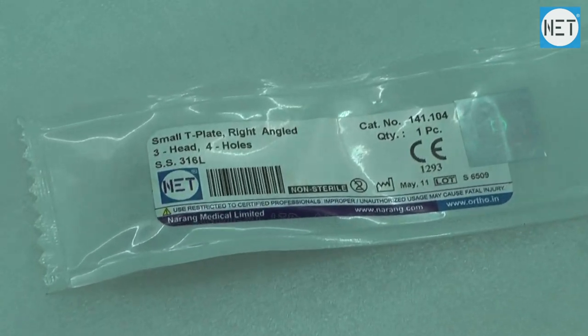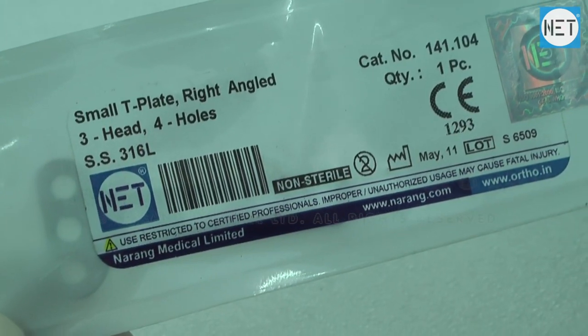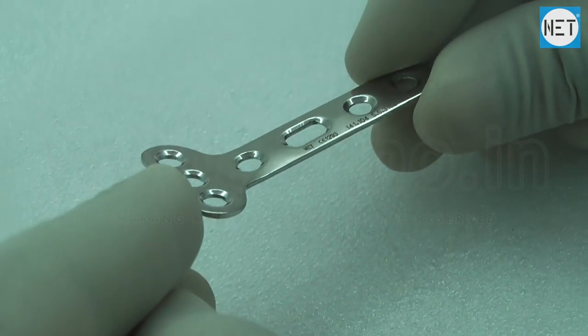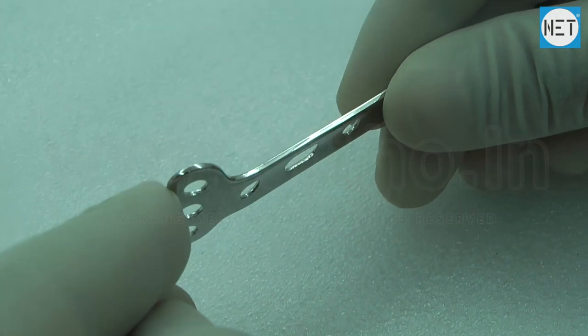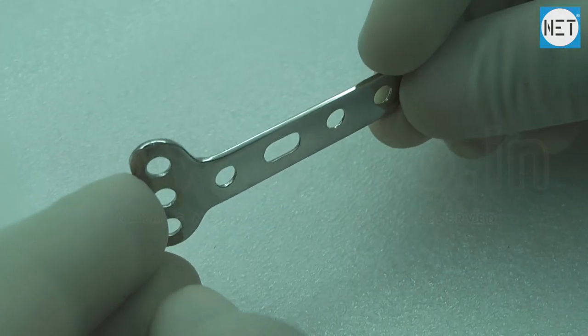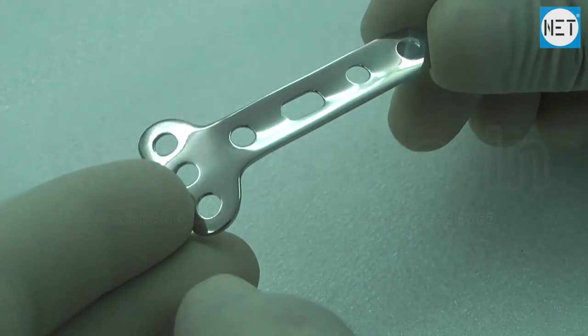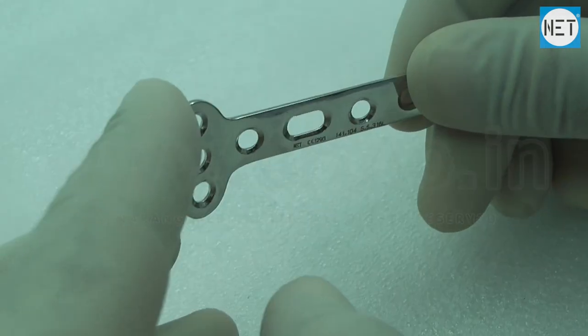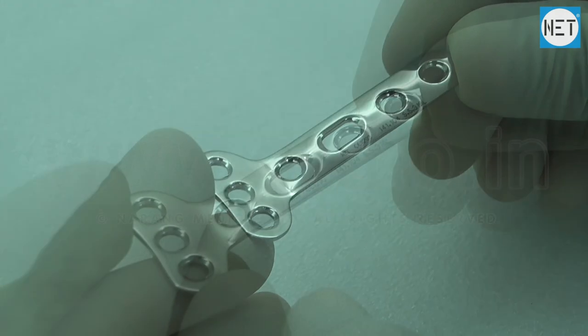Net Brand Small T-Plate 3.5 mm. These plates are used for fixation of partial articular or split metaphyseal fractures of long bones, proximal and distal part of humerus, radius, ulna, tibia and fibula.